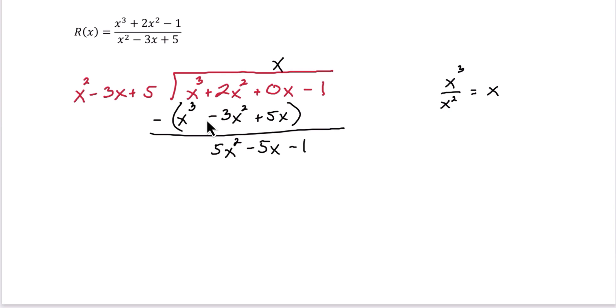Then we repeat the process. First term divided by first term. So if you want to, off to the side, 5x squared divided by x squared. That gives us 5. That goes up in the quotient. And we're basically done with what we need.